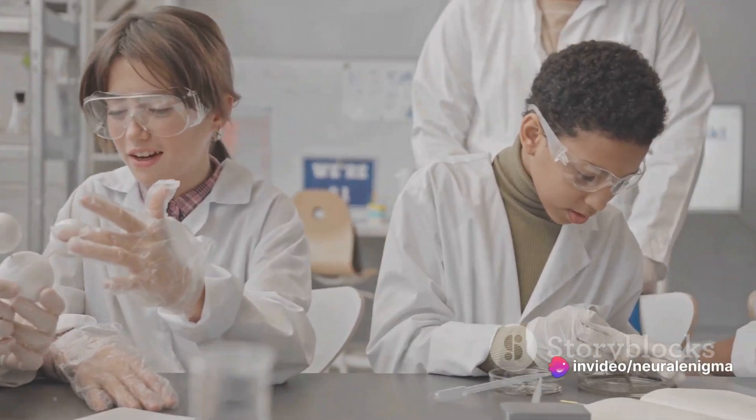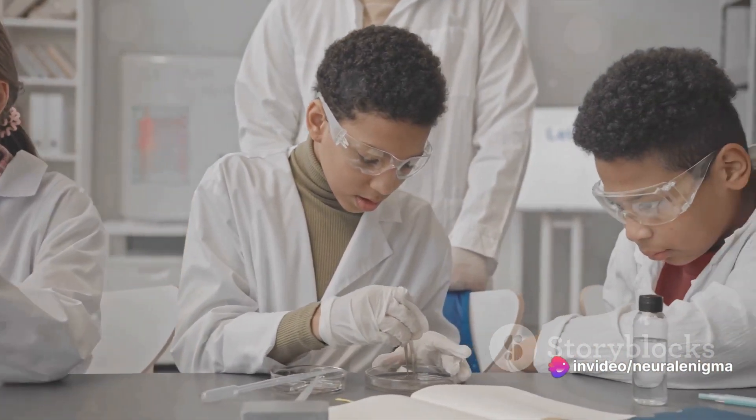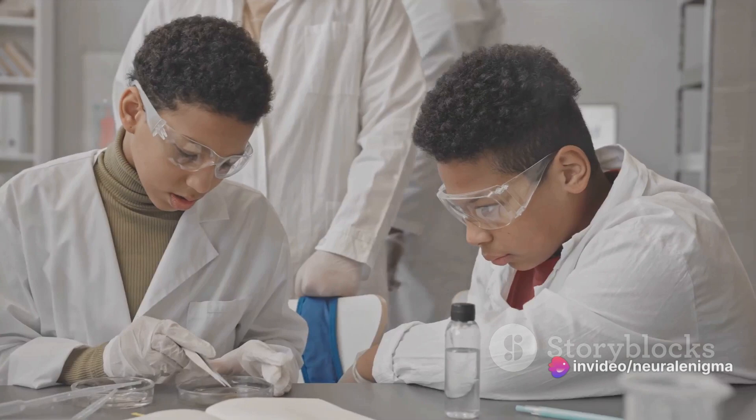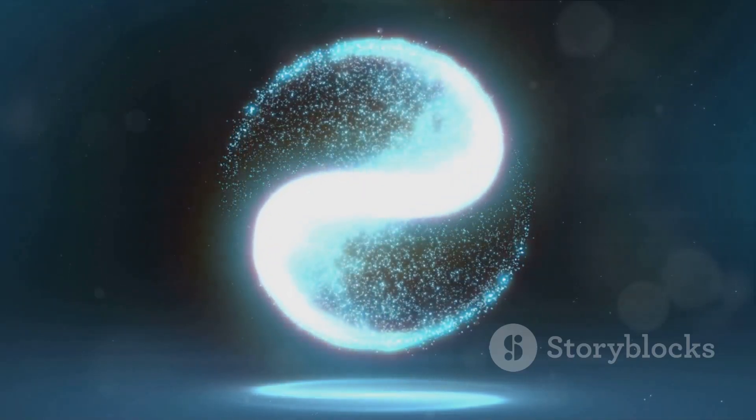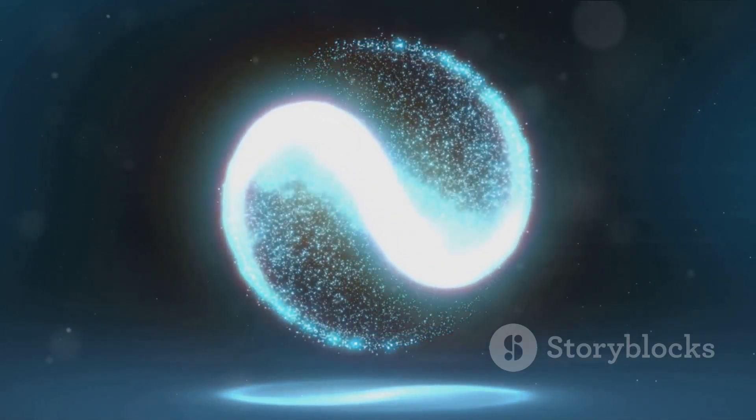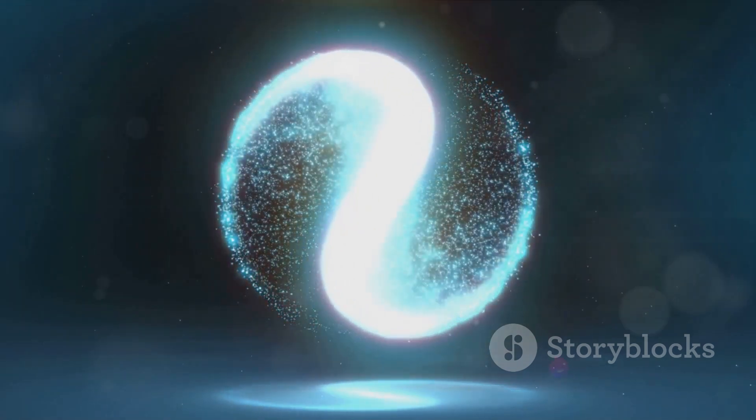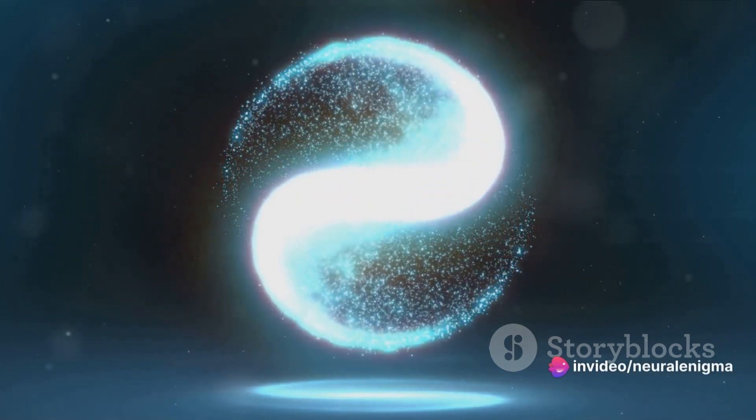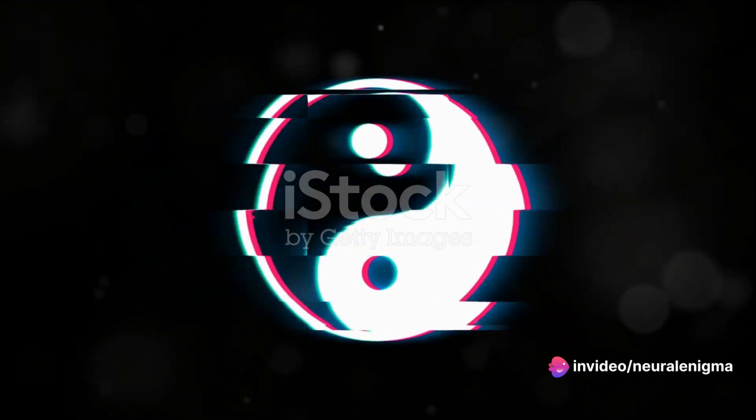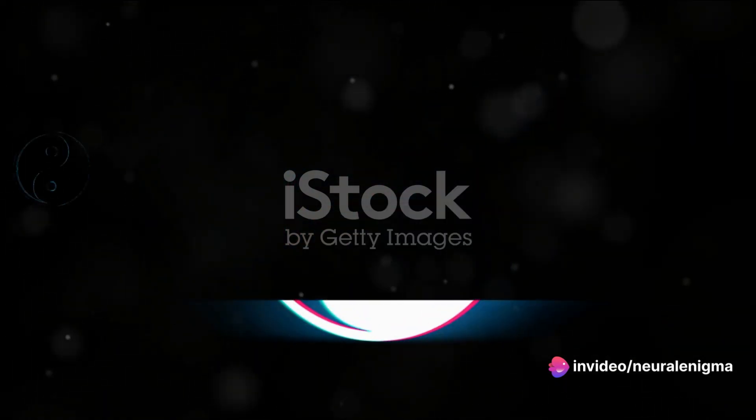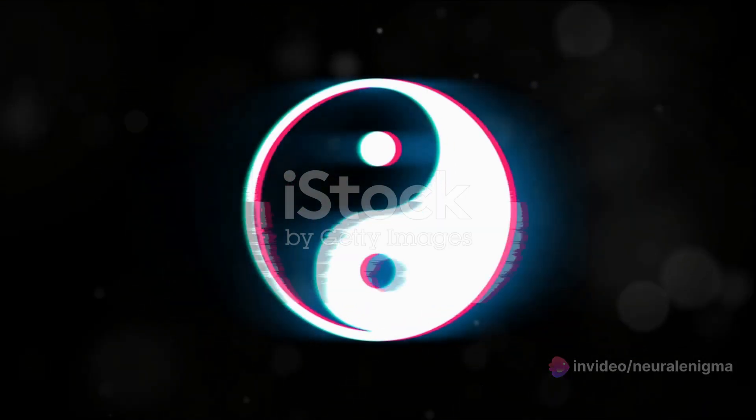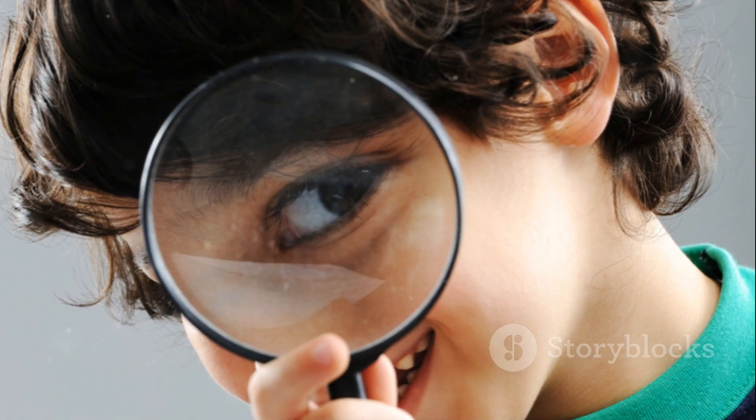This suggests that each particle doesn't just pass through one slit or the other, but somehow it goes through both slits at the same time, like a wave. But how can something be both a particle and a wave simultaneously? That's the million dollar question. This strange behavior, which contradicts our everyday experience and understanding, is what we call the particle-wave duality.